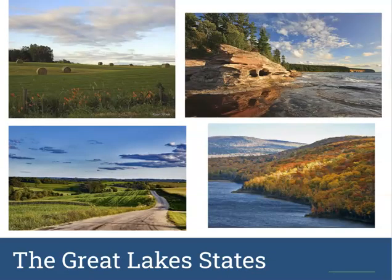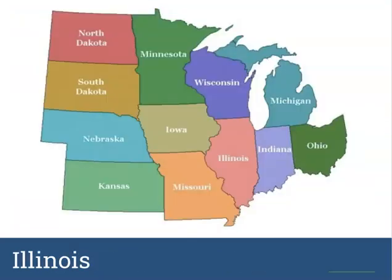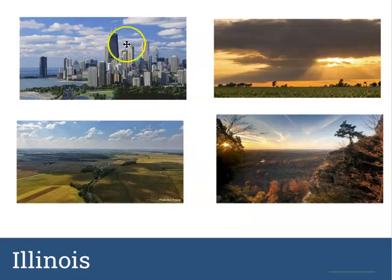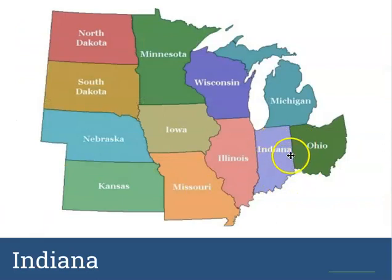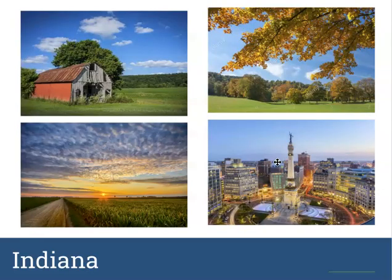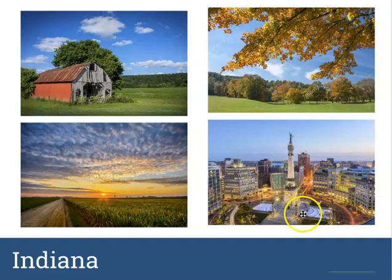Let's look at each state. Illinois, in darker pink, has big cities like Chicago but also a lot of farmland and some hilly areas. Then we have Indiana, our neighbor — it has a lot of flatland and farmland, but also big cities. This is Indianapolis, with a big monument in the middle of downtown in a circle road, surrounded by lots of activity.